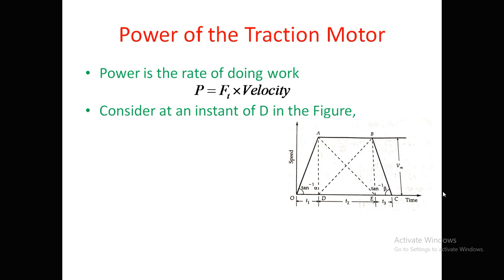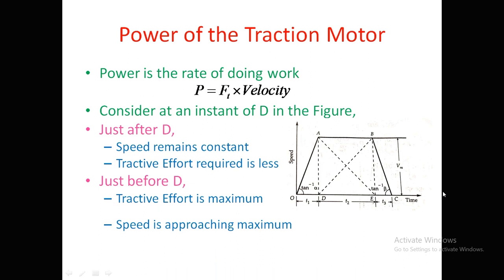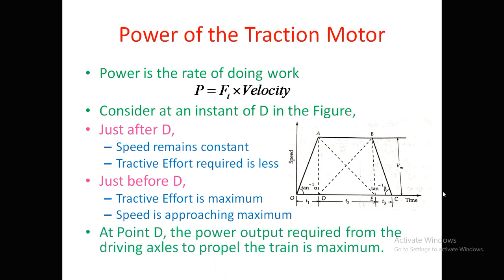Power P equals torque multiplied by speed. Since tractive effort is directly proportional to the torque exerted by the traction motor, when both torque and speed are at their peak simultaneously, power is maximum. Just after D, speed remains constant at Vm and tractive effort is less. Therefore, at point D, the power output required from the driving axle to propel the train is maximum.